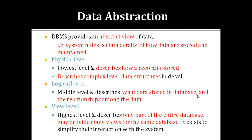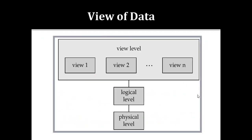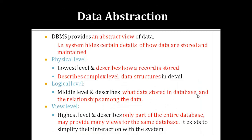After that we cleared the concepts regarding data abstraction. We saw three levels: physical level, logical level, and view level. Physical level means how the record is stored. Logical level means what data is stored in the database and what are the relationships among that data. And the last one is the user level, or view level, where we describe only a part of the complete database.